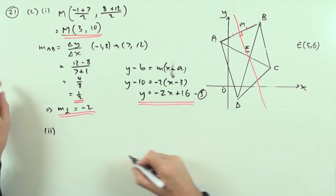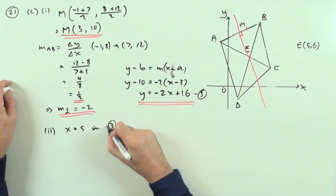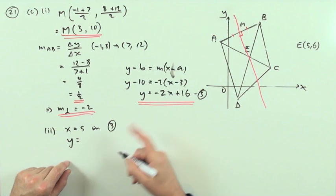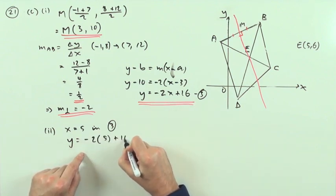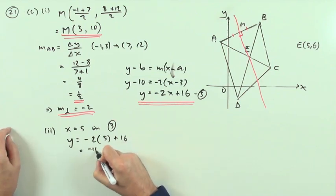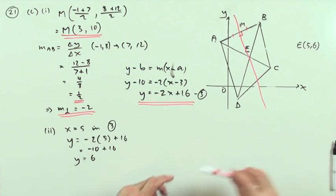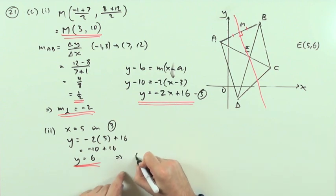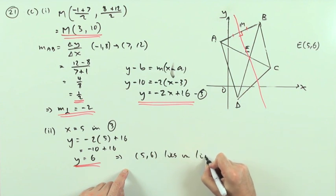Or you could simply see if the coordinates fit. There's the coordinates there, (5, 6). In other words, if I put x = 5 in number 3, will I get 6 out for y? What does this say? If I put x = 5 in 3, I should have -2 times 5 + 16. That's -10 + 16. So y = 6, which means it does. y = 6, which tells me that (5, 6) lies on line 3, the line we just worked out.